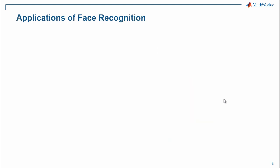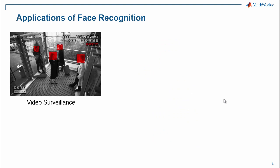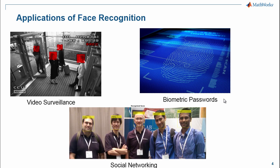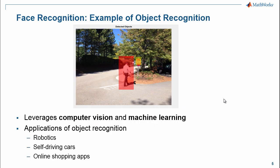Face recognition has many applications in our everyday life. It is most commonly used in video surveillance to match the identity of people in surveillance footage to an existing database. It is used as a biometric password in laptops and smartphones, in very much the same way fingerprint recognition is used. Most recently, it's being used by social networking sites to automatically tag pictures of friends. Face recognition is just an example of the larger area called object recognition, where a system can recognize and discriminate between different objects it has been trained to recognize.